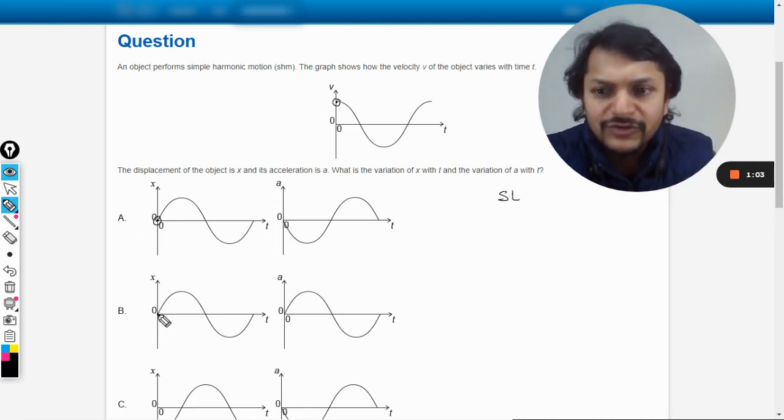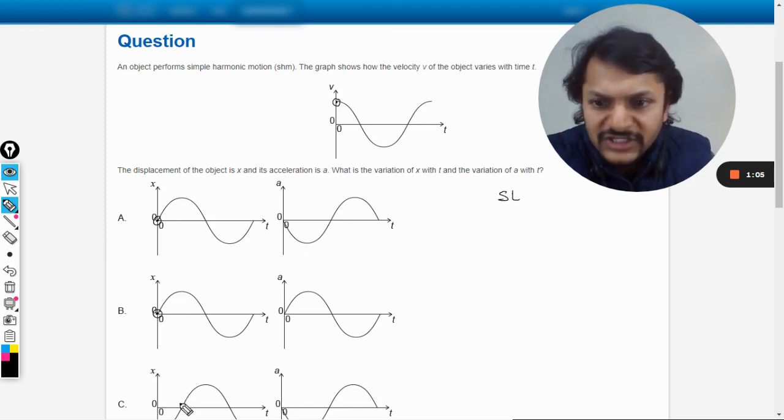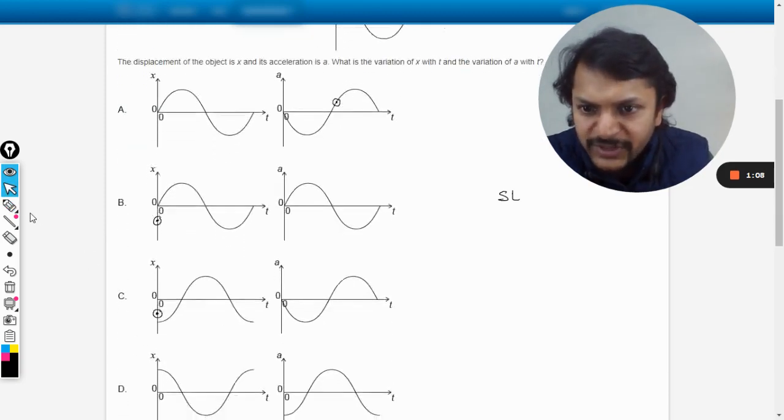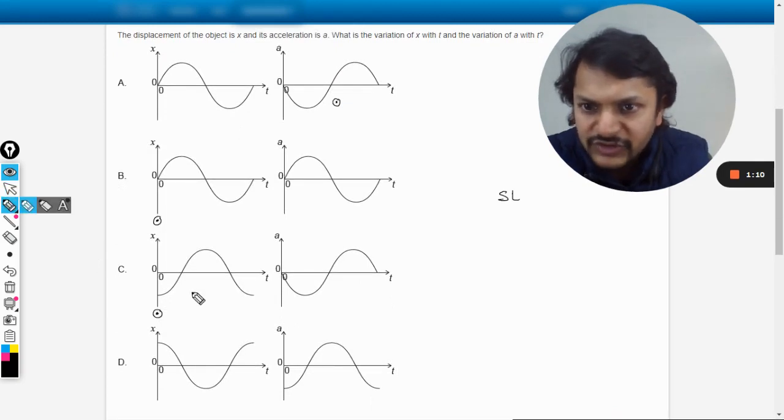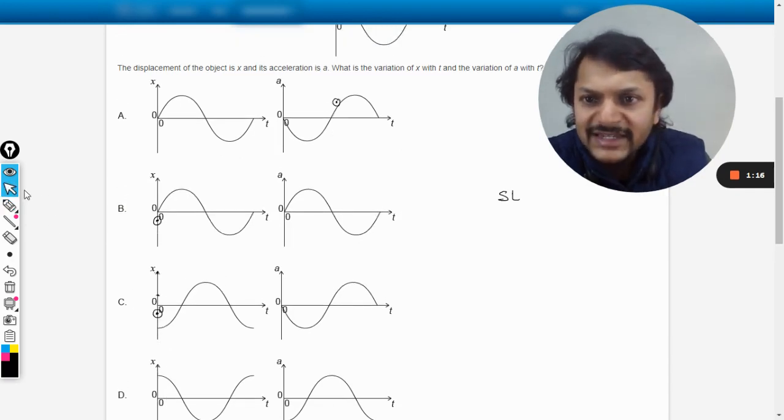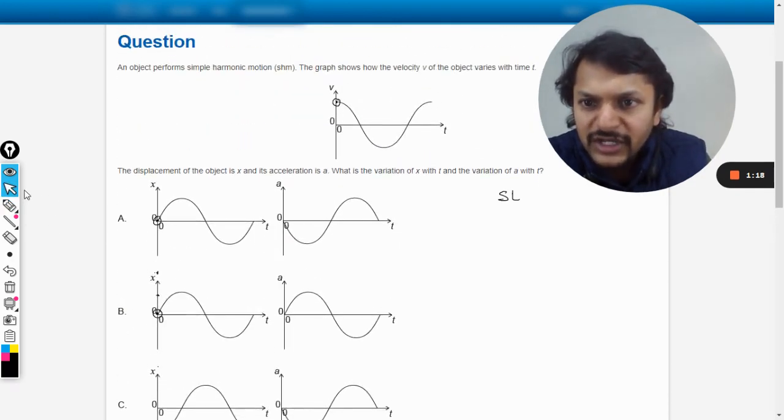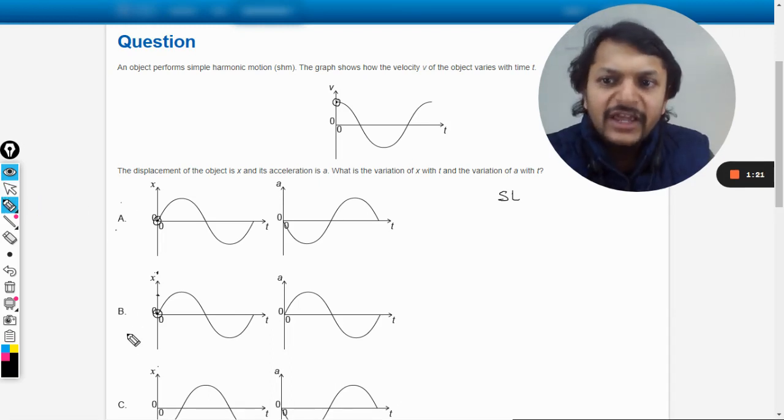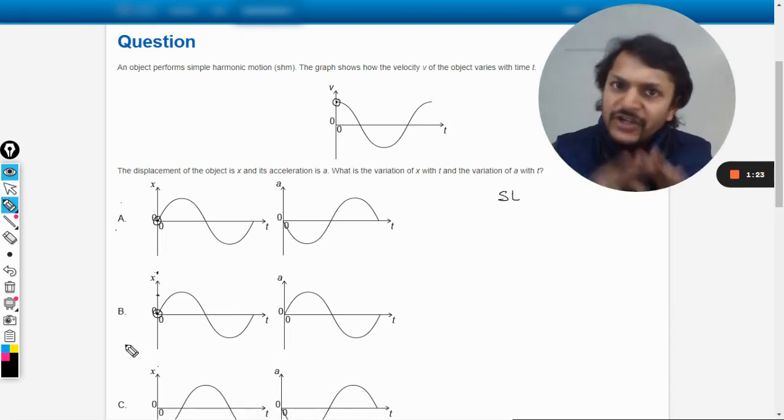These are the other options here, and these options will be wrong. Like C and D both are wrong. You see, for t equals zero, the position is not at zero, and in D also the position is not at zero. So I can say that our answer comes in between either A or B. I would say either A or B is the answer. We are sure about this thing.